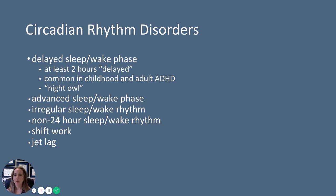Circadian rhythm disorders involve problems with your circadian rhythm where you're not on that normal 24-hour cycle that tells your body when it's time to be awake and when it's time to be asleep. You can have a delayed sleep-wake phase — for example, you're trying to go to bed at 10 but your body isn't ready until midnight. This is really common in childhood and adult ADHD. This is someone who's a night owl — their body and mind is very awake for longer than other people's, and they tend to sleep in later in the morning.